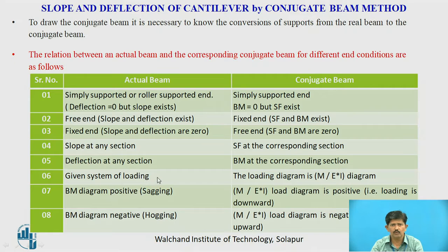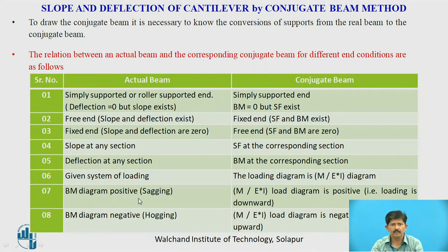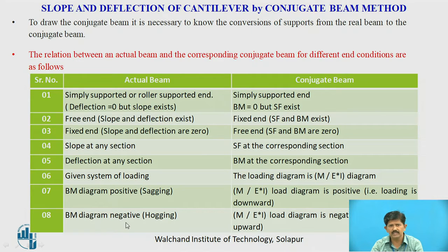A given system of loading in the real beam will produce the loading diagram as M/EI in the conjugate beam. When the bending moment diagram is positive for the real beam (sagging), the M/EI load diagram in the conjugate beam will be downward. When the bending moment diagram is negative (hogging), the M/EI load diagram in the conjugate beam will be upward.